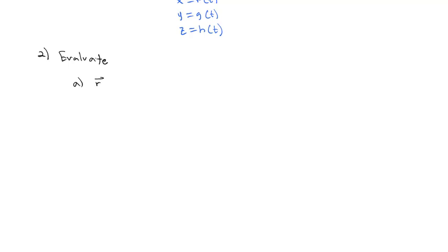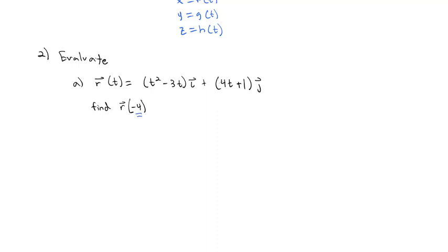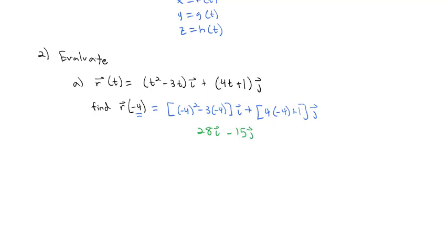If we're asked to evaluate a vector-valued function, for example r(t) = (t² − 3t)i + (4t + 1)j, and we want to find the vector at time t = −4, we plug −4 in: (−4)² − 3(−4) gives 16 + 12 = 28 for the i component, and 4(−4) + 1 = −16 + 1 = −15 for the j component. So r(−4) = 28i − 15j.